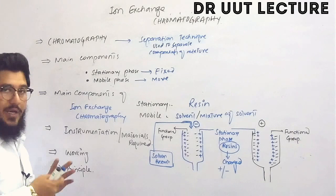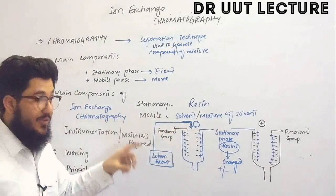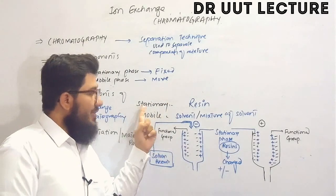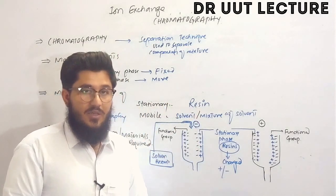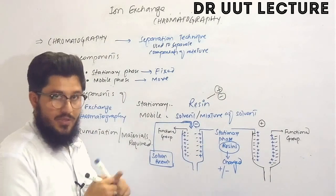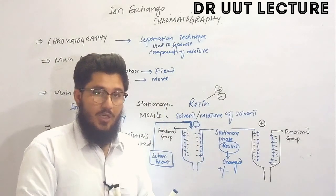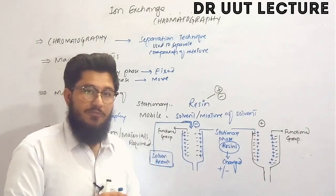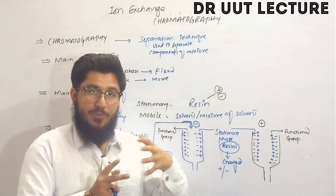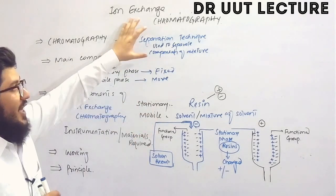Now, the main components of ion exchange chromatography — we have the same two components. In this chromatography, the stationary phase is resin, which may be positively charged or negatively charged. The mobile phase may be a solvent or a mixture of solvents, depending upon what type of sample we are going to separate. According to that particular sample, we decide the type of solvent to be used.